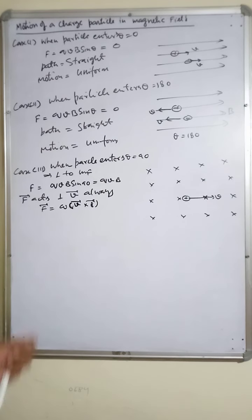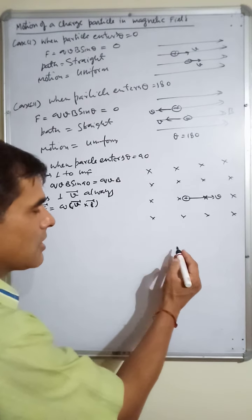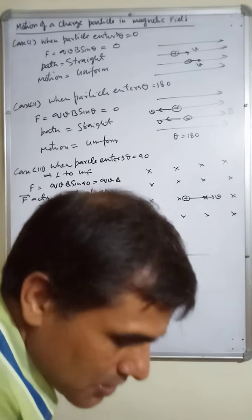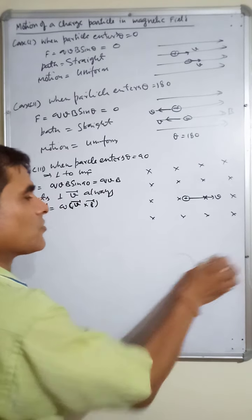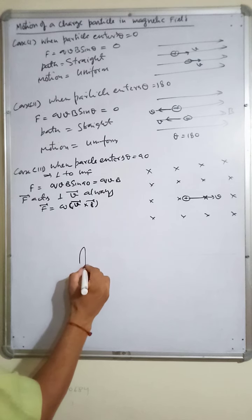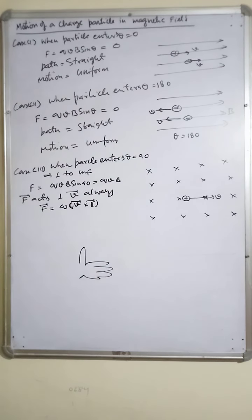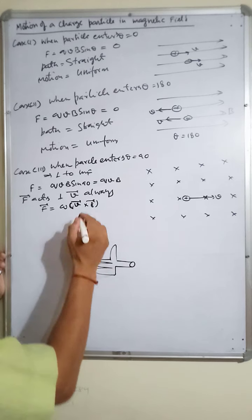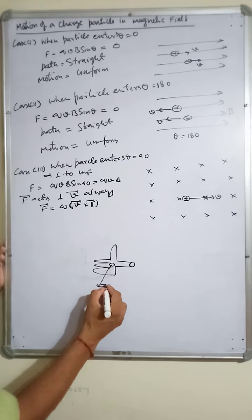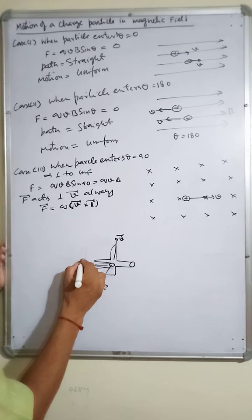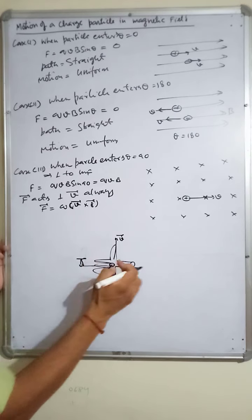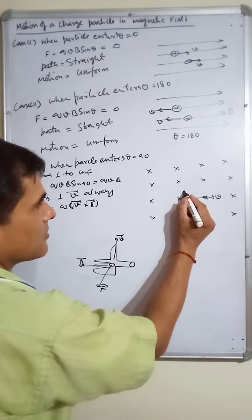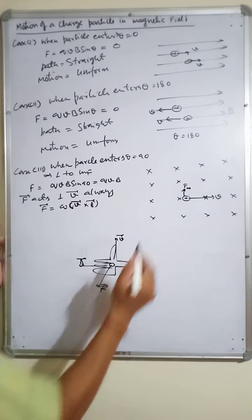Now let us apply the right-hand palm rule to find the direction of this force. The fingers point along the velocity, curl toward the magnetic field — which is perpendicularly inward — and the force comes out perpendicular to the palm. Applying this: magnetic field is perpendicular inward, this is the velocity, and this will be the resulting magnetic force.